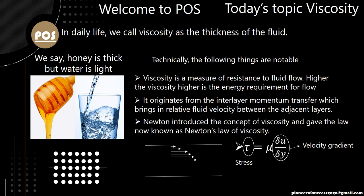It actually differs. The extent of this difference is termed as the velocity gradient. So here if you see, we have introduced a concept of pipe flow where these two lines represent the walls of the pipe and these arrows represent the fluid velocity at different positions in the pipe.